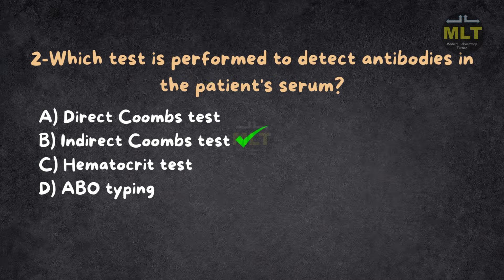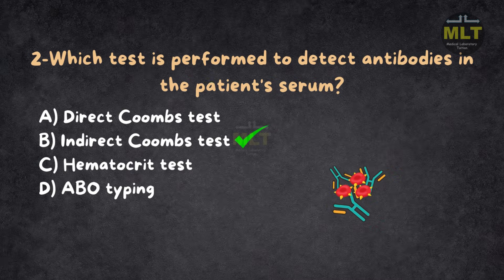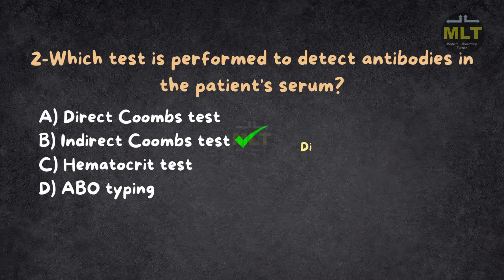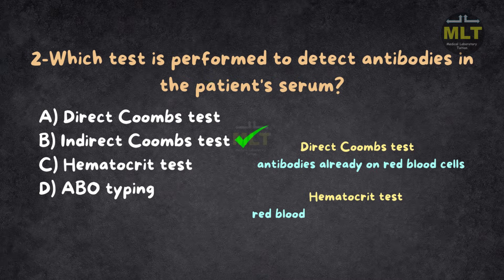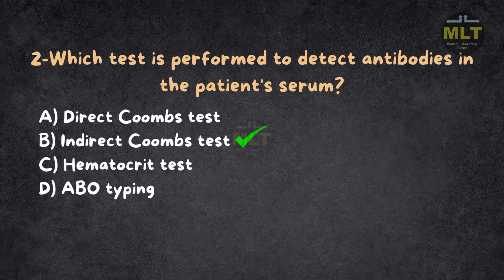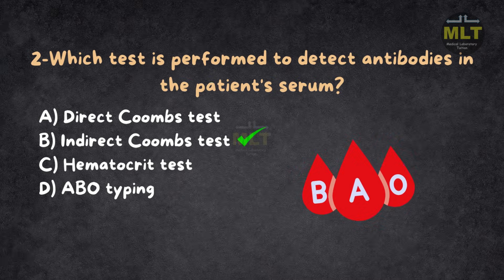Explanation: The Indirect Coombs test detects antibodies in the serum that may react with red blood cells, preventing transfusion reactions. The Direct Coombs test detects antibodies already on red blood cells. The Hematocrit test measures red blood cell volume, not antibodies. ABO typing determines blood type but doesn't detect antibodies in the serum.